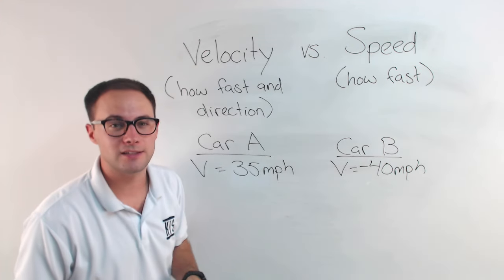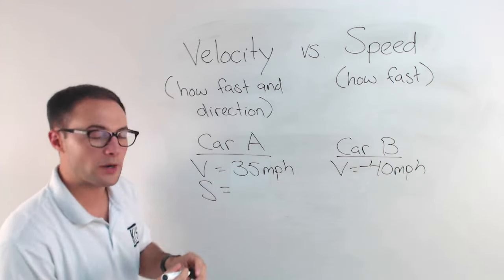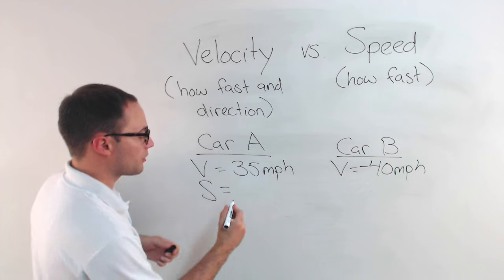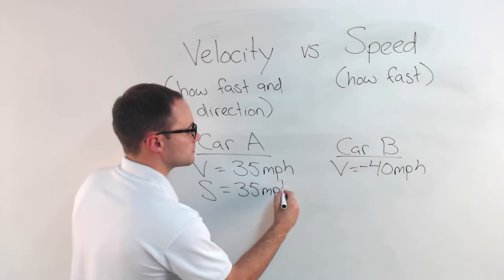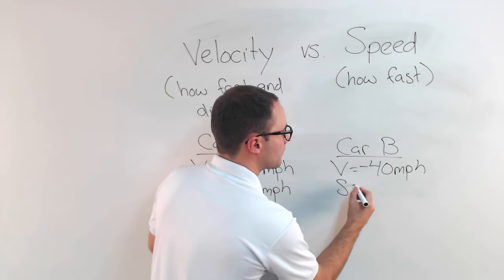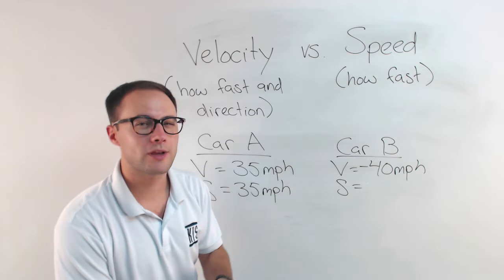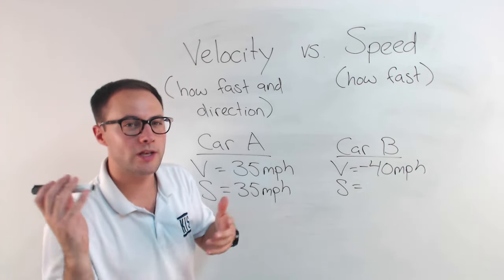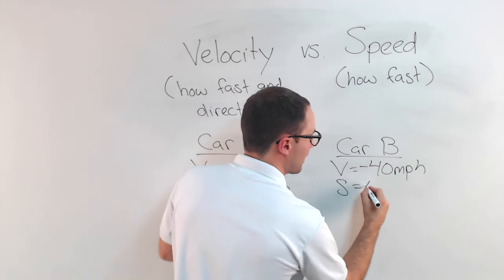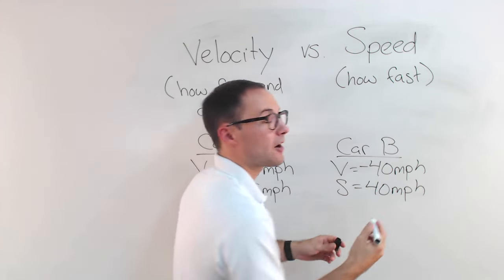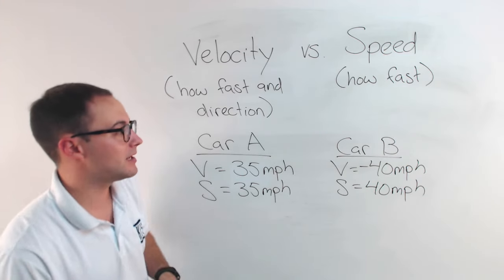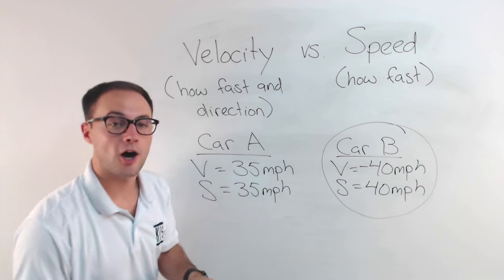So that's the velocities. Now let's figure out what the speed is, because that was the question — which had the greater speed? The speed for car A is still 35 miles per hour. For car B, remember with speed we don't care about direction, just how fast. It's going in reverse, but it's going 40 miles per hour.